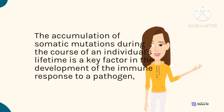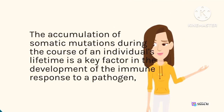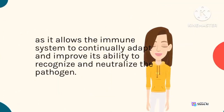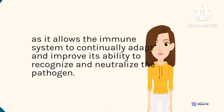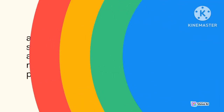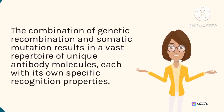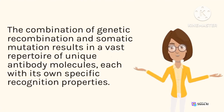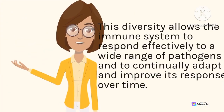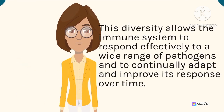The accumulation of somatic mutations during the course of an individual's lifetime is a key factor in the development of the immune response to a pathogen, as it allows the immune system to continually adapt and improve its ability to recognize and neutralize the pathogen. The combination of genetic recombination and somatic mutation results in a vast repertoire of unique antibody molecules, each with its own specific recognition properties. This diversity allows the immune system to respond effectively to a wide range of pathogens and to continually adapt and improve its response over time.